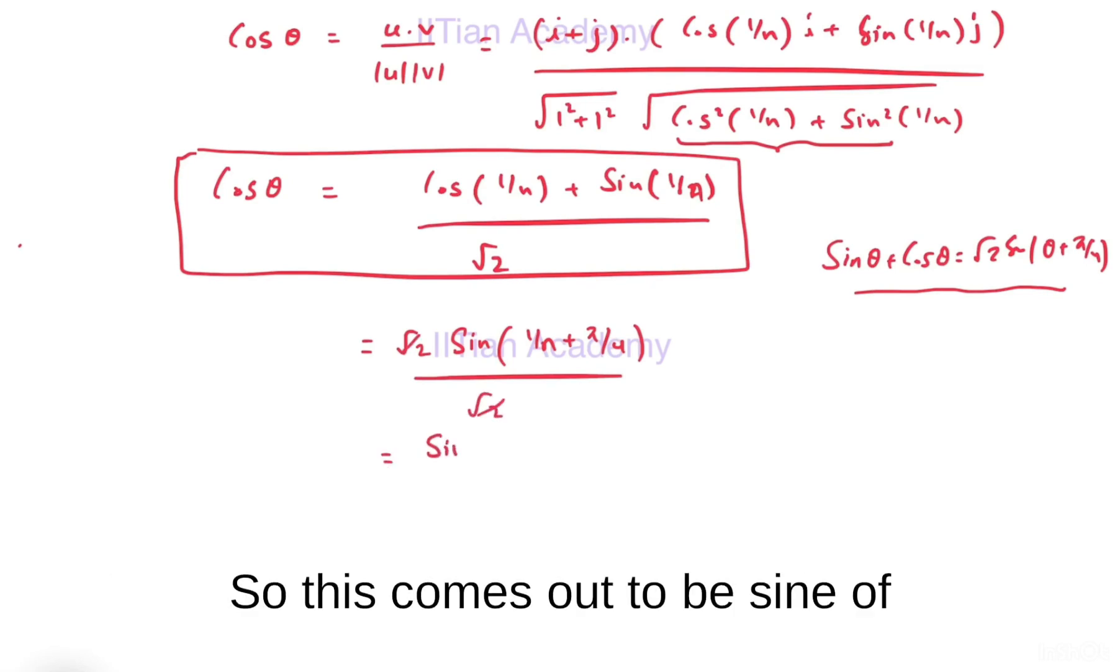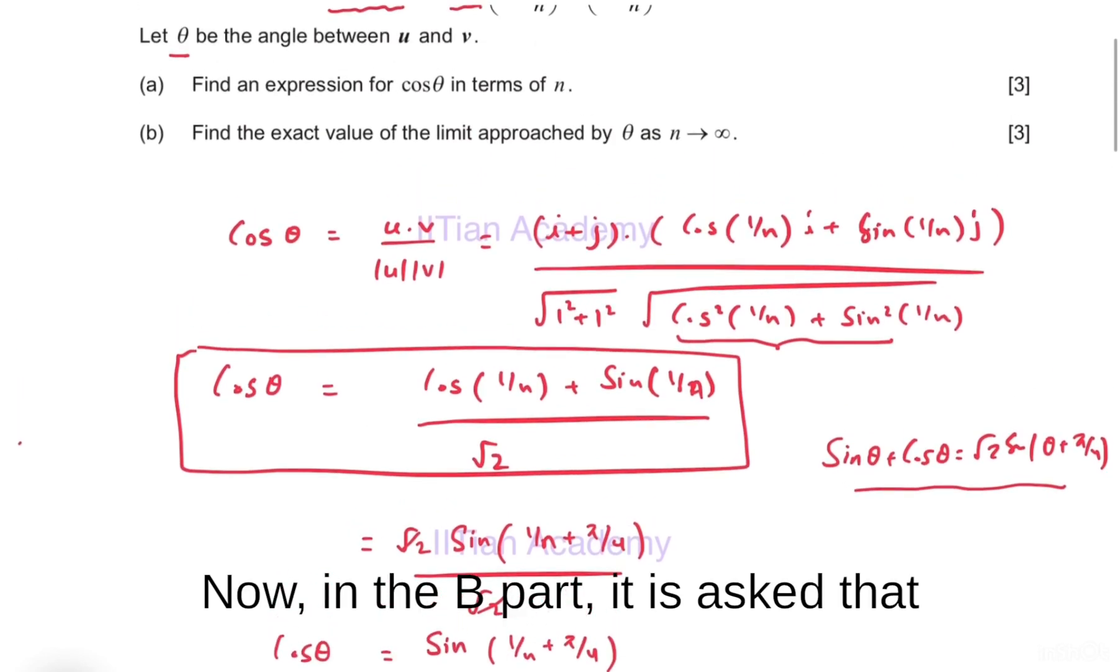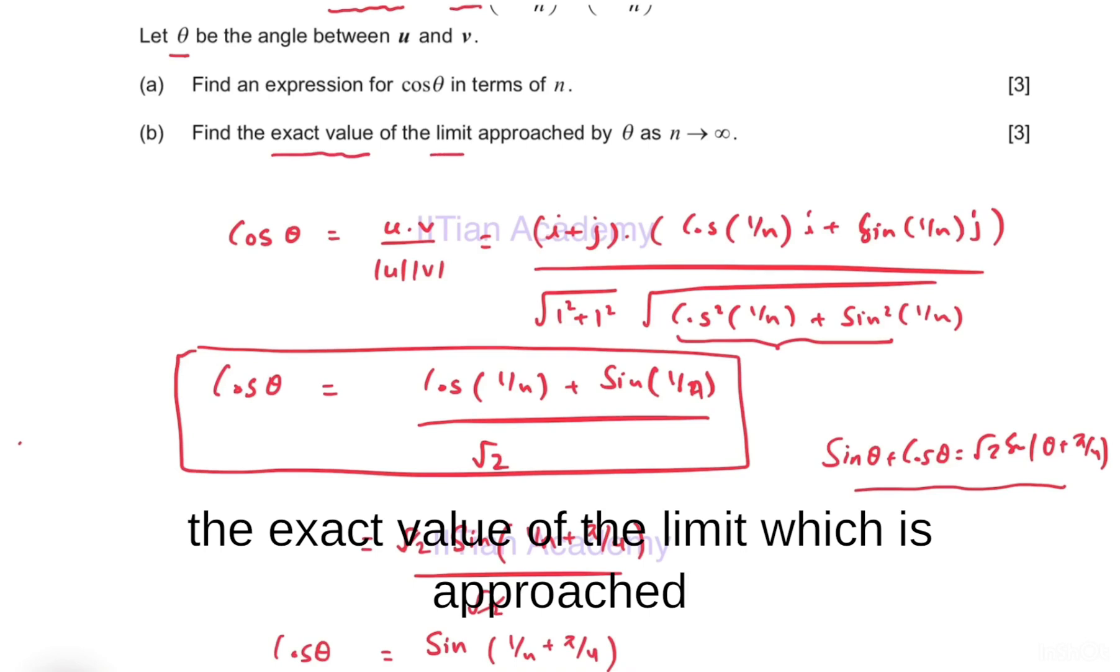This comes out to be sin(1/n + π/4). Now in part B, it is asked for the exact value of the limit.